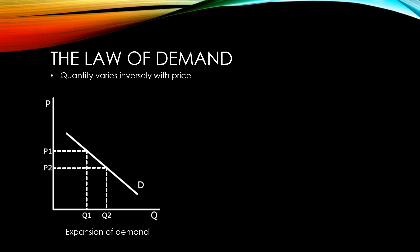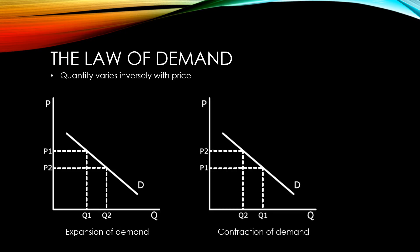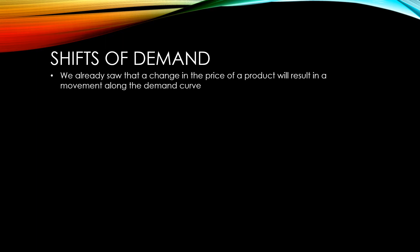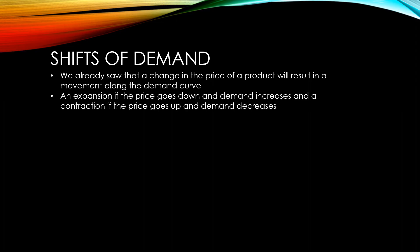This increase in demand is known as an expansion of demand, and you can see it drawn here in this graph. When we see the opposite and the price of a product increases, causing demand to decrease, this is known as a contraction of demand. If the price of a product changes, it will result in a movement along the demand curve — an expansion if the price goes down, and a contraction if the price goes up.